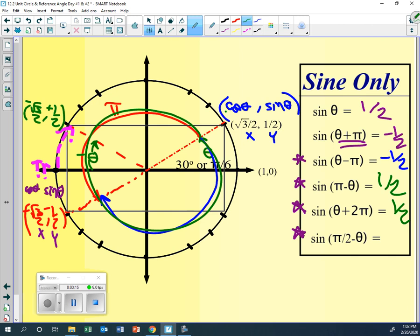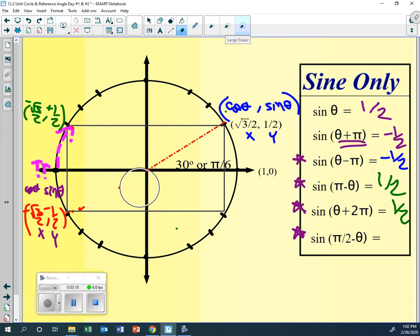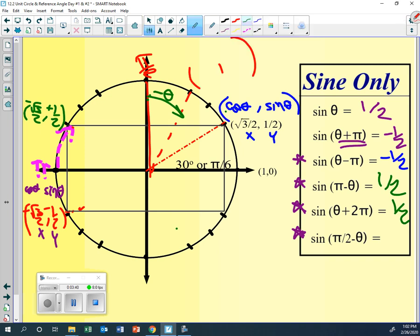So the last one is the tricky one. What we're going to do here is we're going to start at pi over 2, and then we're going to go back theta, back theta. So this is going to be, instead of 30 here, this one's going to be 60, and what do you know about this coordinate compared to the 60? It's going to be reversed, right? One half, square root of 3 over 2. So if this is x, and this is y, the cosine of theta is one half, the sine of theta is going to be square root of 3 over 2, and positive.